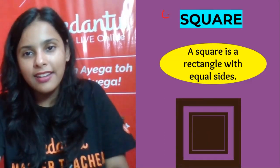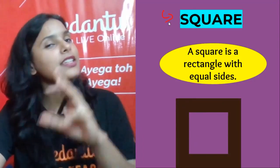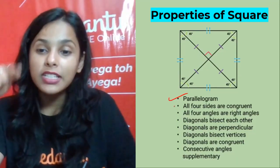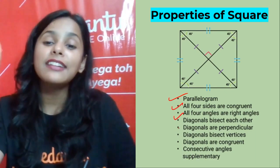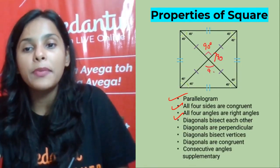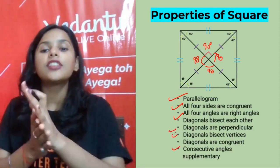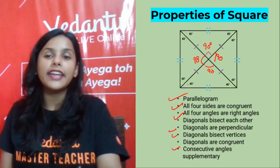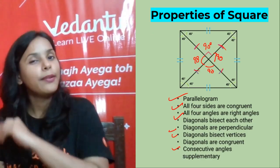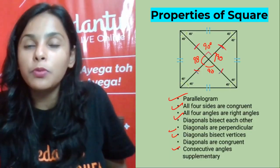Now let's talk about square. Square is very simple — all sides are equal and all angles are equal. Again, all parallelogram properties apply here as well. All four sides are congruent, all four angles are equal. Diagonals bisect each other. Diagonals are perpendicular to each other — 90 degrees — just as we saw in rhombus. Consecutive angles are supplementary, and diagonals are congruent — both diagonals are equal to each other and divided into two equal parts.